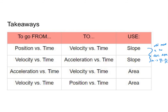When going from an acceleration versus time graph to a velocity versus time graph, or from a velocity versus time graph to a position versus time graph, we use area. Taking away seconds means using area. You'll need to go from a velocity graph to find position and acceleration, from an acceleration graph to create velocity-time and position-time graphs, and from a position graph to create velocity versus time and acceleration versus time graphs.